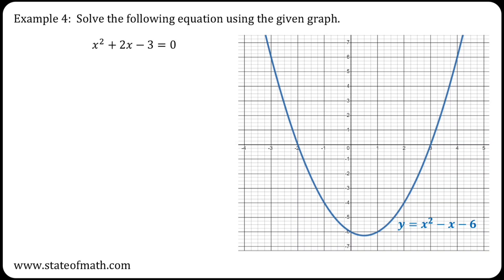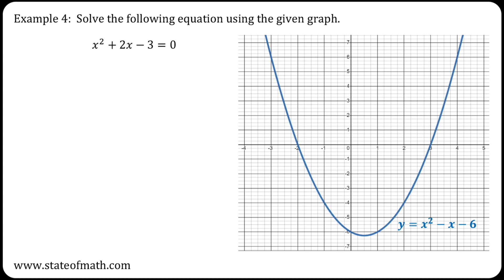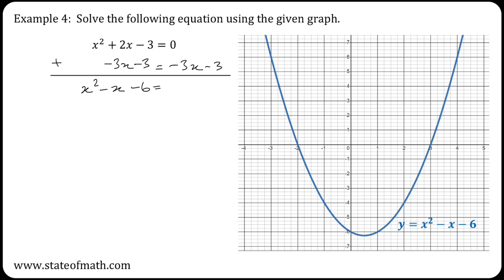In example 4, I have a different case because the left-hand side is not the same as the graph that I have plotted, so I'll need to make some adjustments so that the left-hand side becomes the plotted graph. I'll need to adjust the 2x to become a minus x, so I'll subtract 3x. But I also need to do that on the right-hand side so the equation is not affected. Also, I have a minus 3 when I should have a minus 6, so I'll subtract another 3 on both sides.